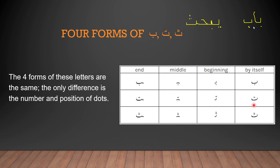Now let's move on to Ta. The Ta by itself, or the original form, is very similar to Ba — only it has two dots above. That is the only difference between Ba and Ta. The beginning version of Ta is similarly like the beginning version of Ba, with the only difference being the two dots on top. The middle version also has only two dots on top.